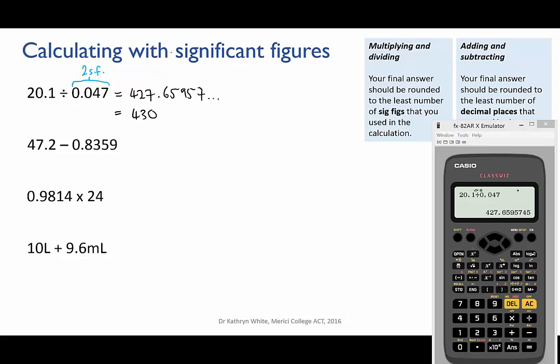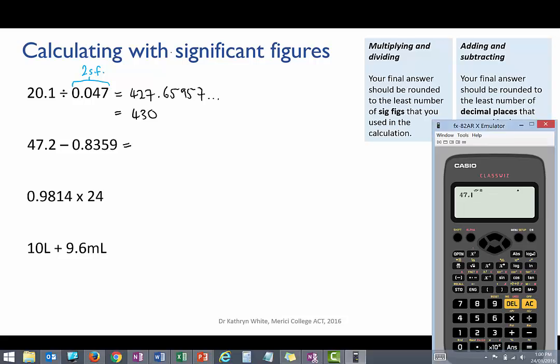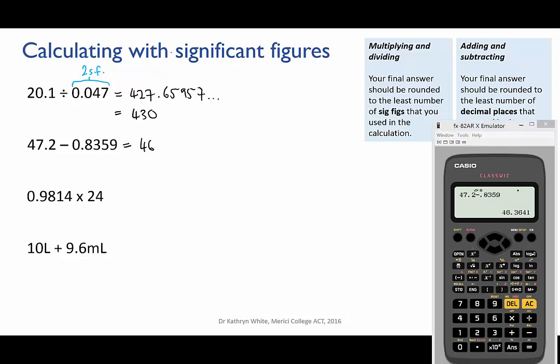Next, 47.2 minus 0.8359. We put it into the calculator and we get 46.3641. Now because this is a subtraction, we're looking at decimal places and not sig figs.